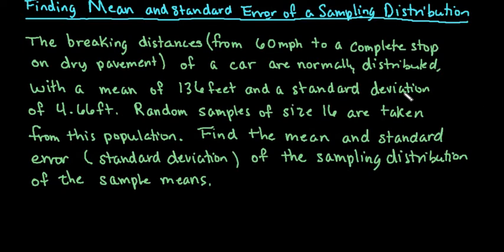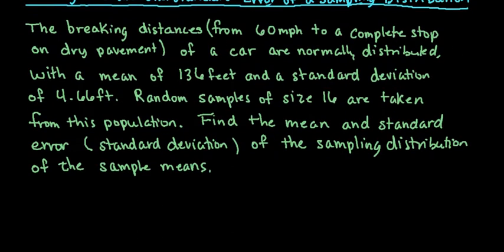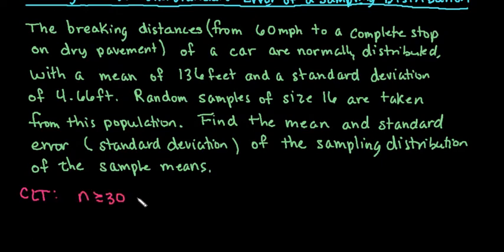There are a couple of things you have to keep in mind in order to use it. For the central limit theorem — I'll abbreviate it as CLT — remember that in order for this to kick in, you either have to have a sample size greater than or equal to 30, or it has to come from a normally distributed population.